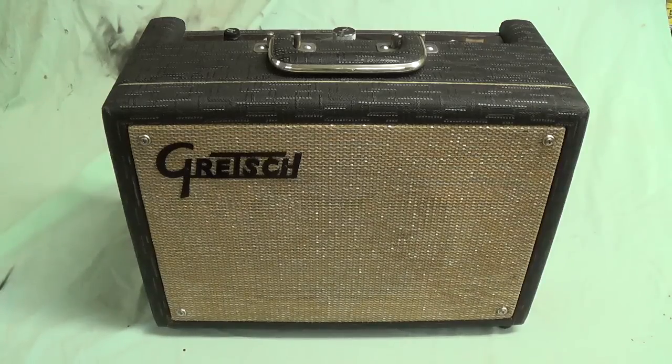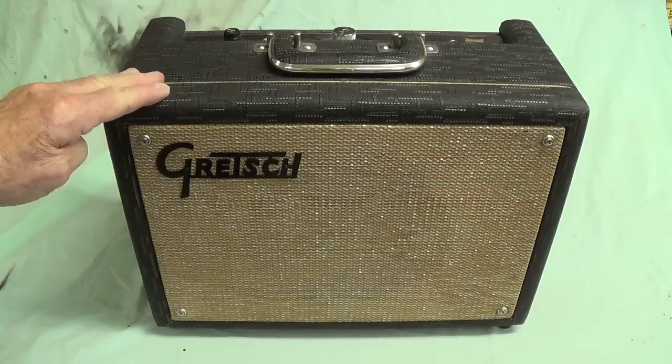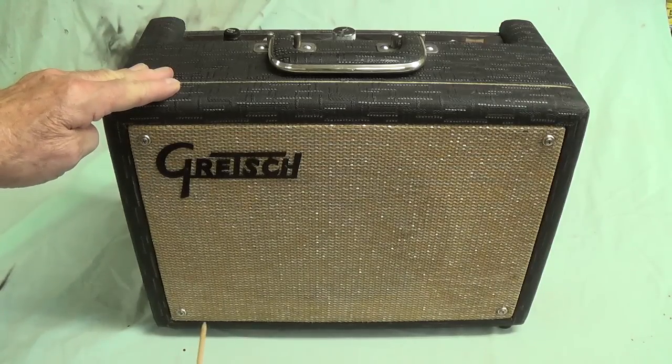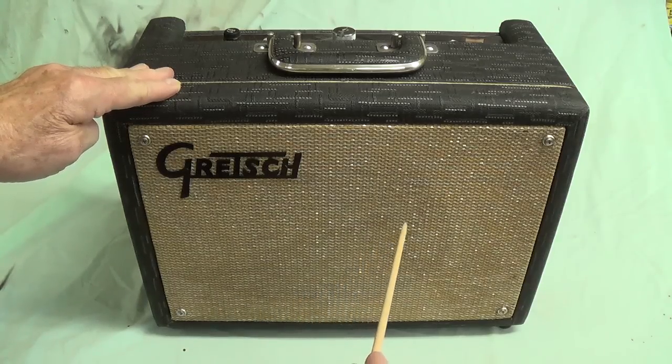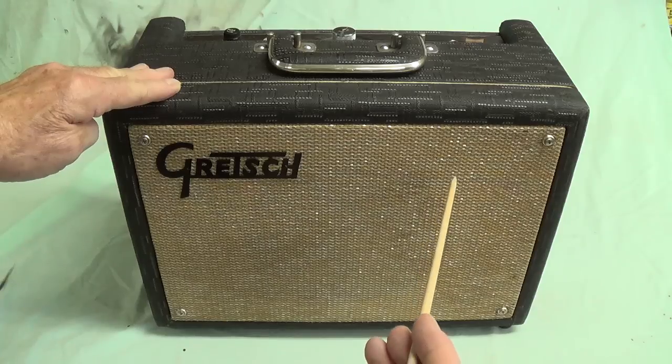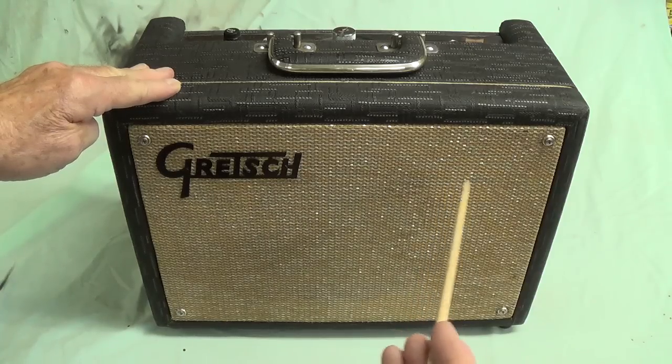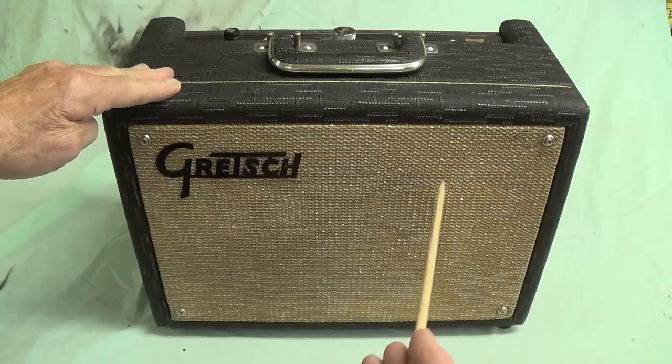But detractors say we're wasting our time because with a tube rectified amplifier such as the Gretsch, as we slowly ramp up our AC voltage, the rectifier is not putting out any B plus until the AC gets up quite high, around 100 volts or so.